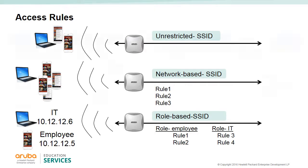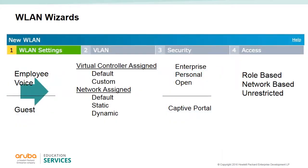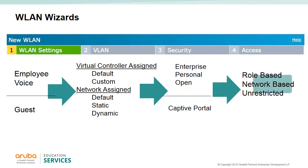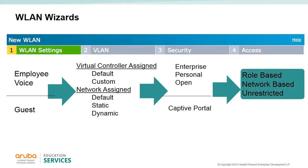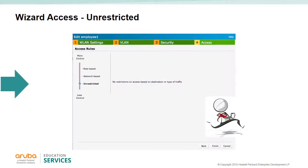When configuring the wireless LAN via the wizard, you will be able to select your access roles during step four. Here you can define the firewall settings as needed. You can also define firewall settings in the system tab off the main GUI page. If you select the unrestricted role, it is similar to selecting the any-any-any-any permit statement — no restrictions are placed on any traffic.